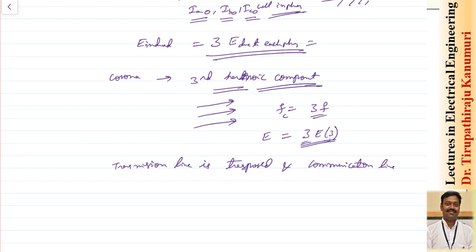To summarize: due to the electromagnetic effect, currents are induced in the communication line. For balanced conditions, transposing the transmission line is sufficient; for unbalanced conditions involving zero sequence or third harmonic components, transposing the telecom line along with the transmission line nullifies the effect. In the next class, we will cover the electrostatic effect and precautions for reducing both effects. Thank you very much.